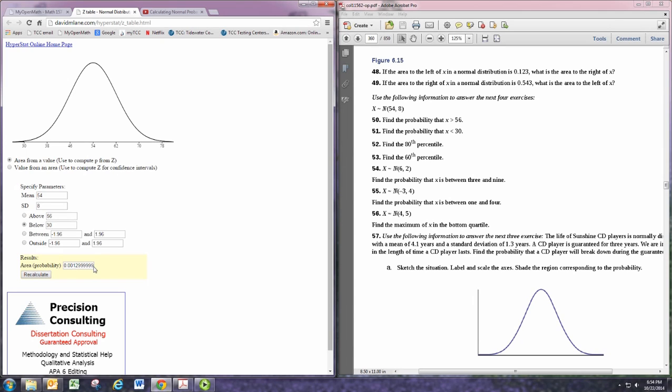Now, let's find the probability that x is between 30 and 56. Select between, put in the smaller number on the left, and the larger number on the right, and hit recalculate.